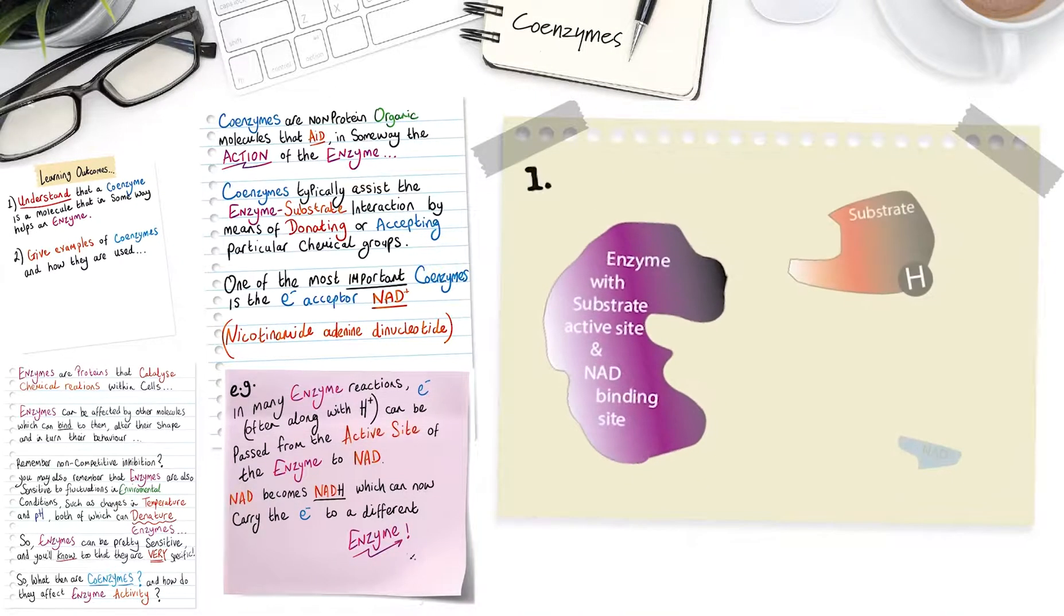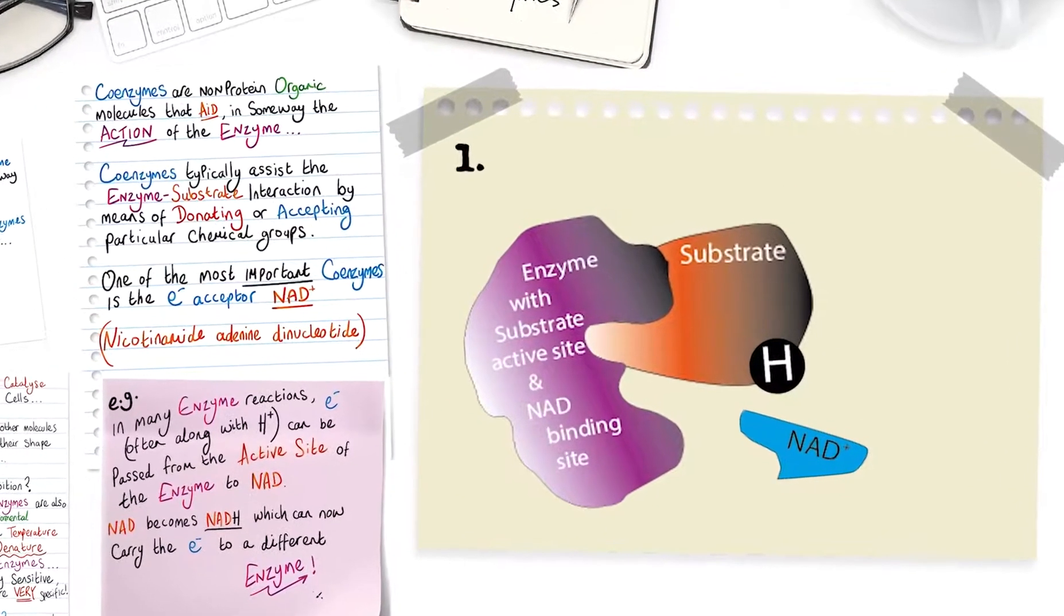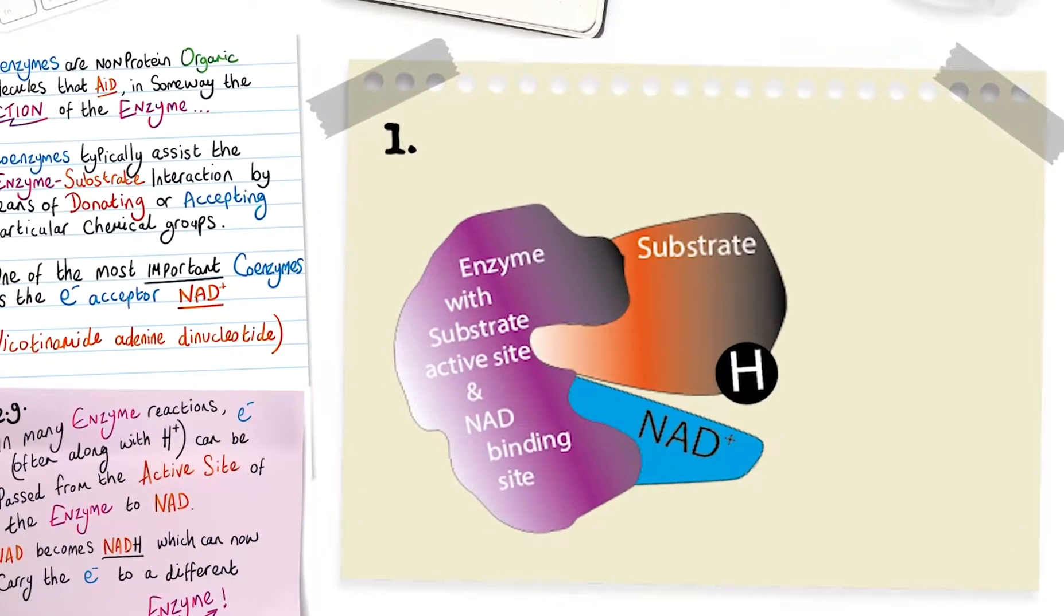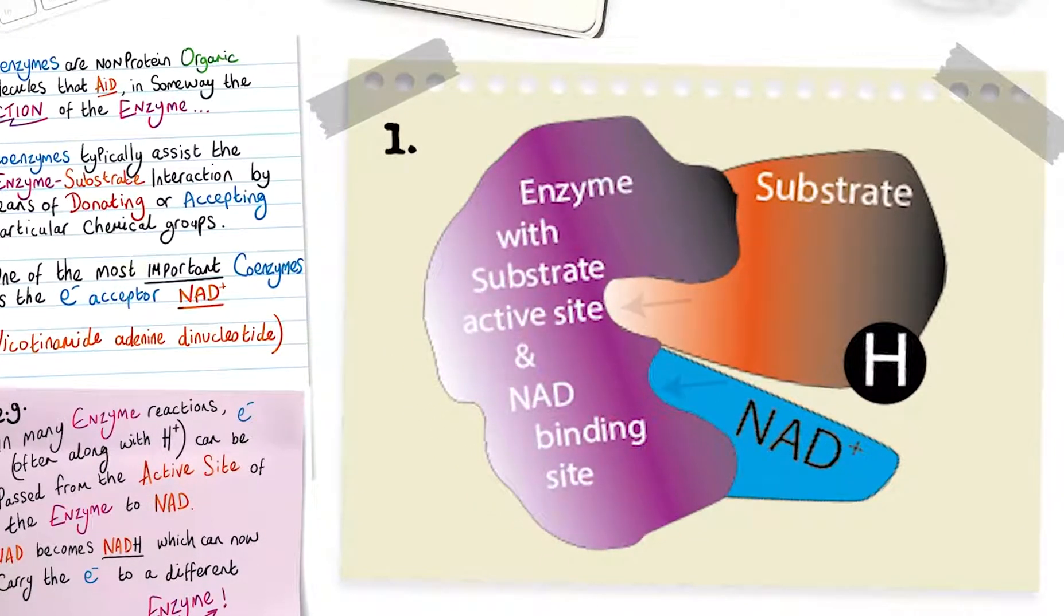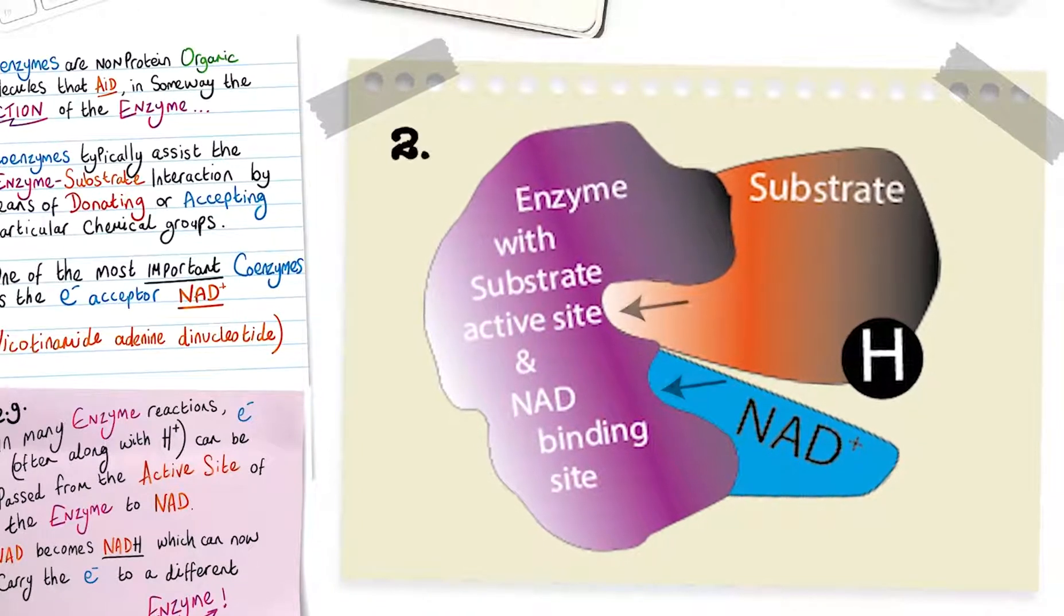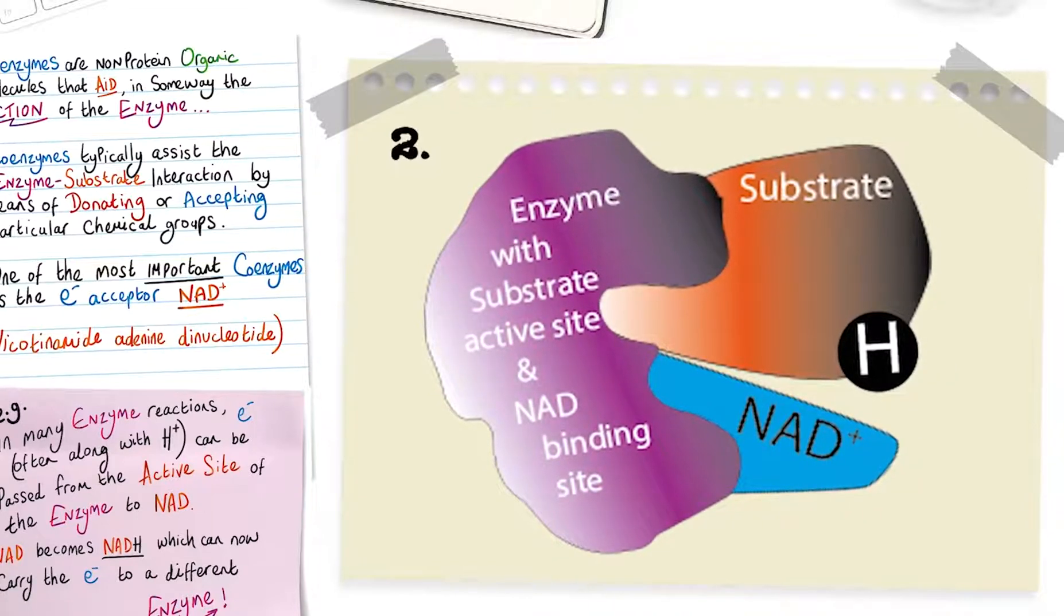Here, we see in step one, an enzyme binds to its substrate and since this enzyme has a binding site for NAD, it can bind to the enzyme too. Notice that the enzyme's active site and NAD binding site are very close together. Step two and the enzyme substrate complex is formed and the enzyme's also bound to NAD.